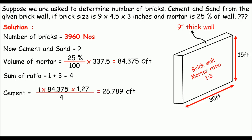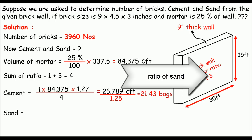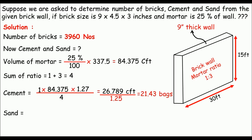To convert cft to bags, divide by the volume of one cement bag, which is 1.25 cft in Pakistan — use your country's bag volume as needed. So cement = 26.789 / 1.25 = 21.43 bags. For sand, the ratio is 3, so sand = 3 × 26.789 = 80.367 cft.